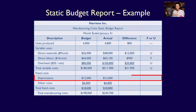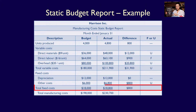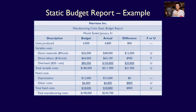For depreciation, budget is $12,000 and actual is $12,000 — a variance of zero, so we place a dash. For other fixed costs, $6,000 budget compared to $6,800 actual is a difference of $800 — actual costs are more than expected, which is bad for Harrison, so we put a U for unfavorable. Total fixed costs: $18,000 budget compared to $18,800 actual is a difference of $800, also unfavorable. Looking at total manufacturing costs, the budget of $198,000 versus actuals of $230,700 results in a difference of $32,700 — definitely unfavorable.